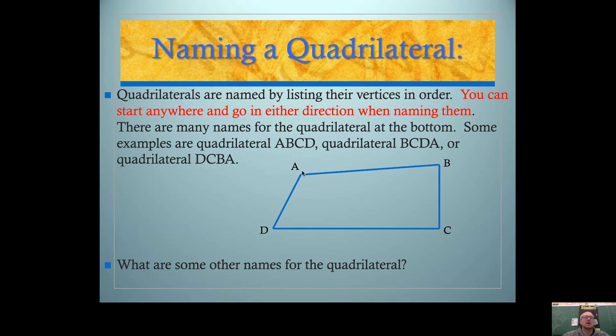We're going to name this quadrilateral. Quadrilaterals are named by listing their vertices in order. You can start anywhere and go in either direction when you name them. So for example, you can name this quadrilateral A, B, C, D.